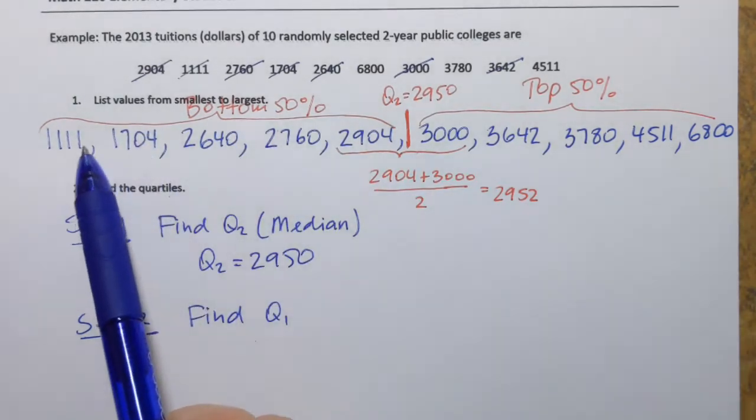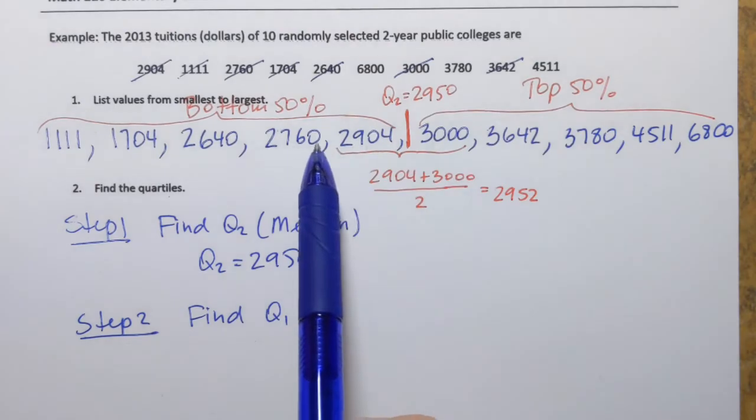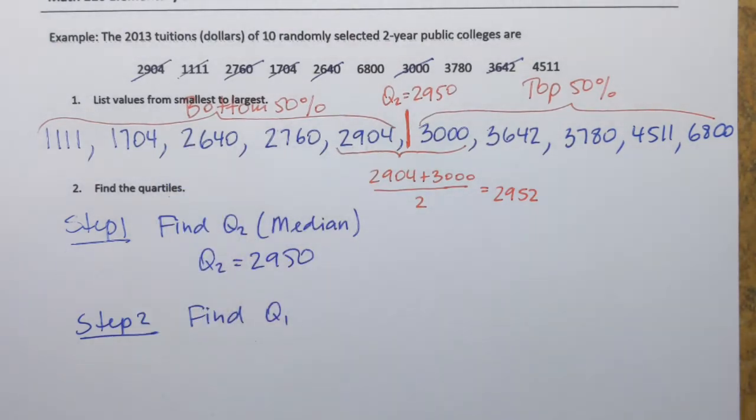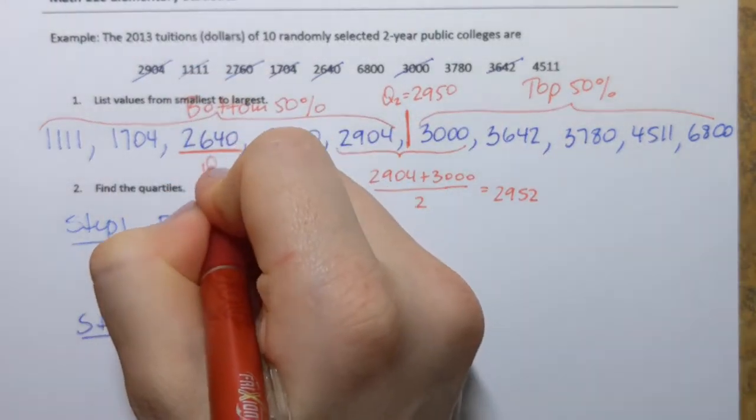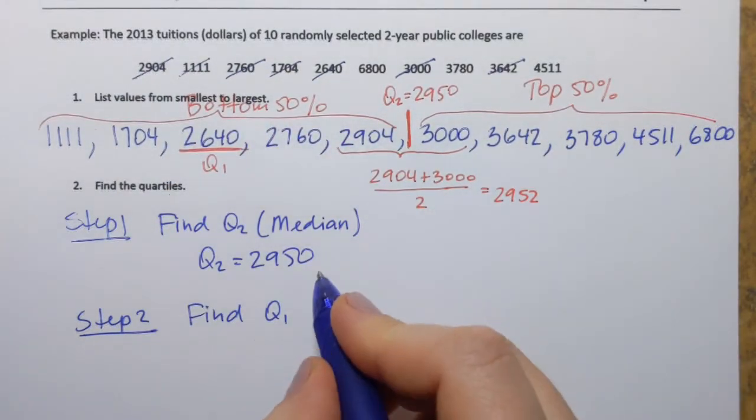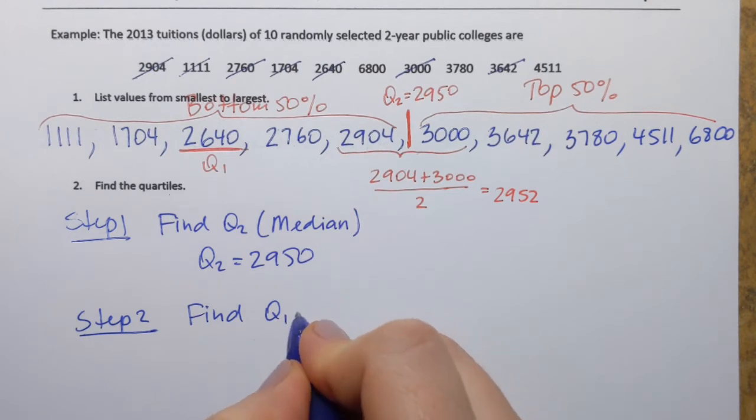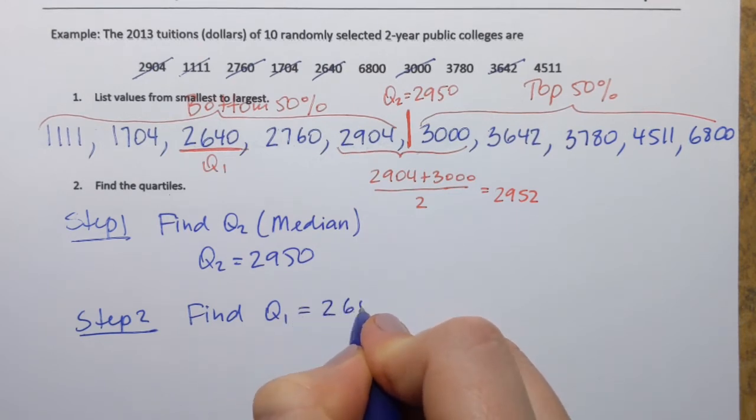So here I have 1, 2, 3, 4, 5 values, the odd number of values. So the one that's right in the middle is going to be Q1. So Q1 equals 2,640.